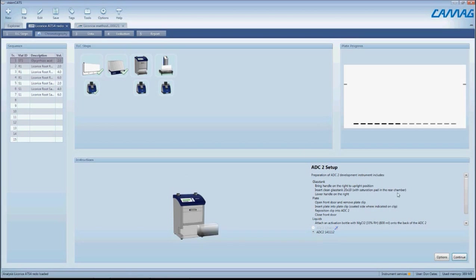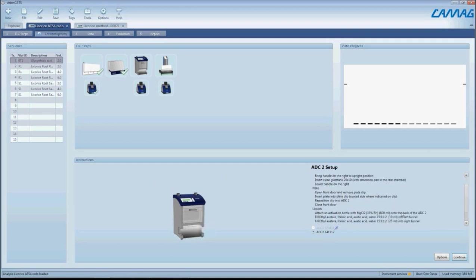We've put in the tank with the saturation pad in the rear chamber, lowered the handle, inserted the plate properly, and put in our solvent system. As you can see, it tells you the solvent and how much to put into each of the solvent funnels on top of the instrument. We have our activation bottle for the humidity control in the back with magnesium chloride. So that's ready as well.